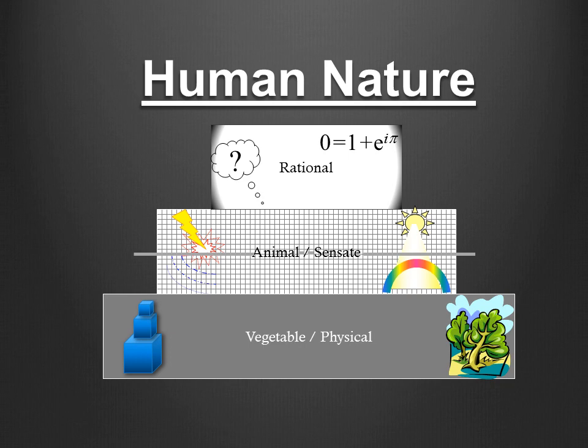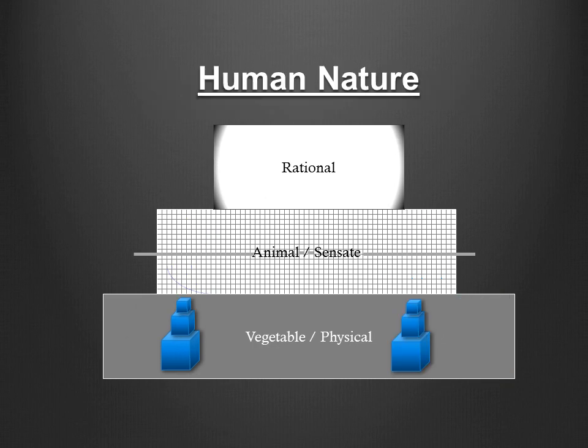According to this tradition, human nature is rational on top, sensate or animal in the center, and physical or vegetable on the bottom. At the bottom there's the physical world. We can't do anything with that in language — it's just out there.